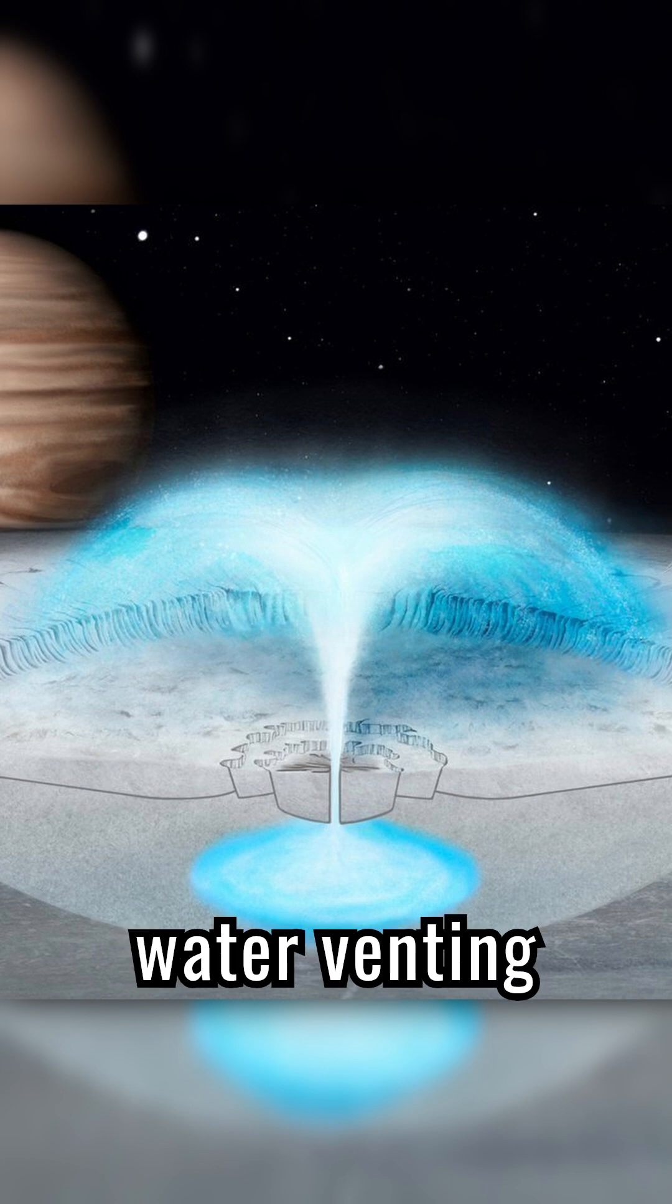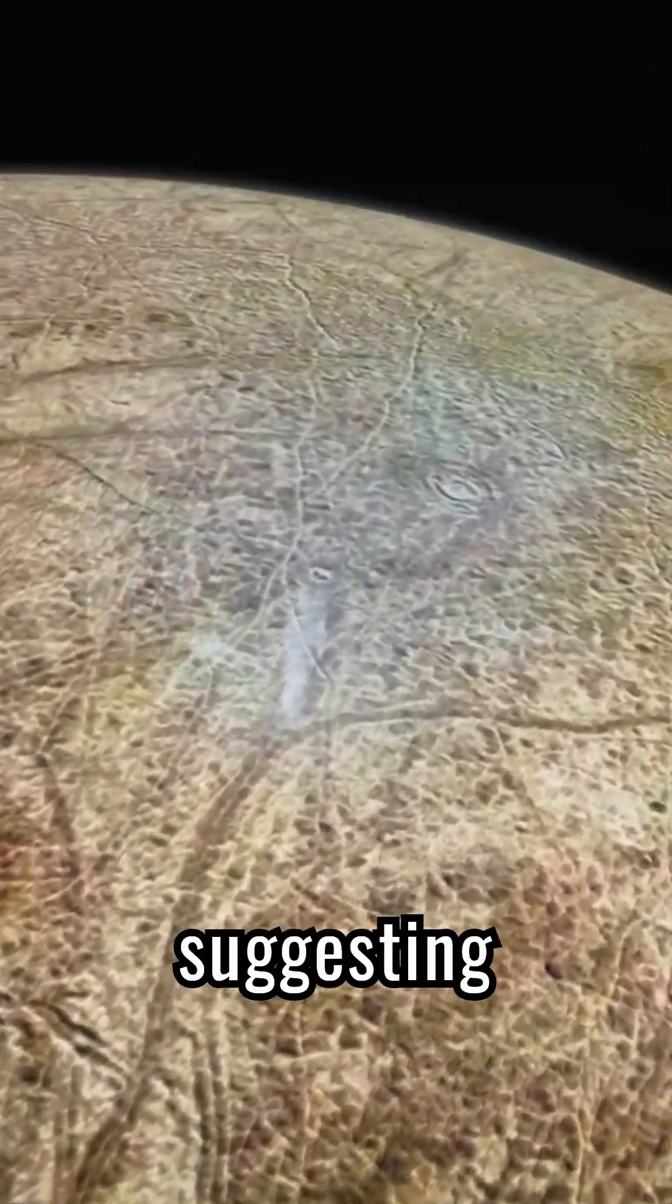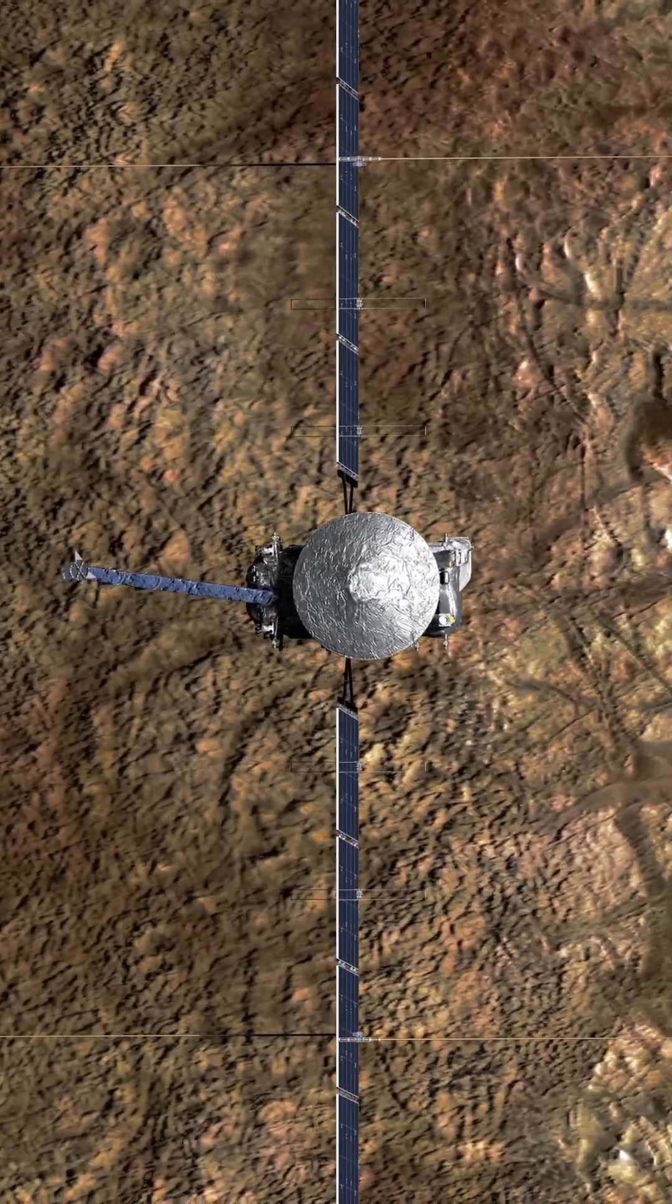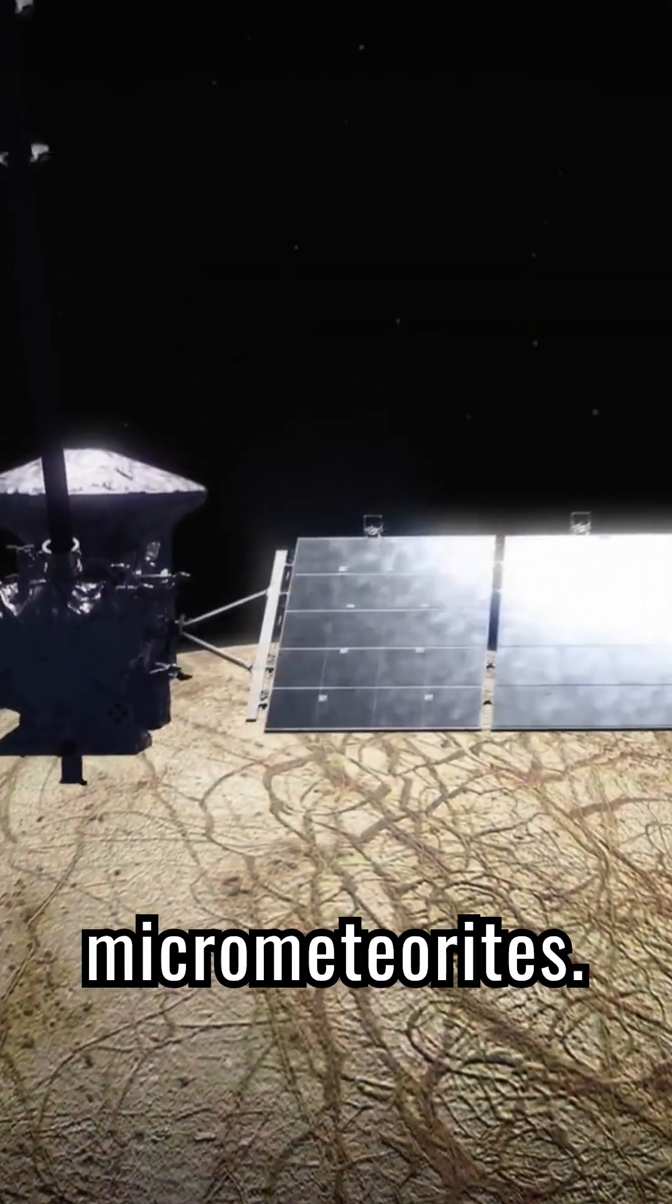Researchers found signs of water venting into space, suggesting Europa is geologically active today. Other gases might be leaking out, and dust is blasted off by micrometeorites.